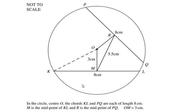M is the midpoint of KL, so there is a point M on KL and it is the midpoint, which means it's going to divide the line KL into two equal halves — so KM is four centimeters and ML is also four centimeters. R is the midpoint of PQ, which means it's going to divide PQ into two equal halves: four centimeters on each side.